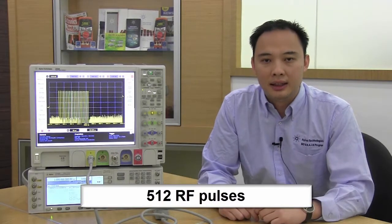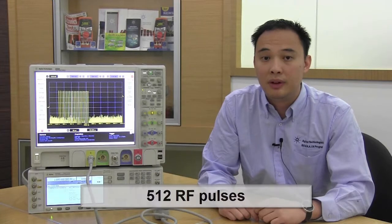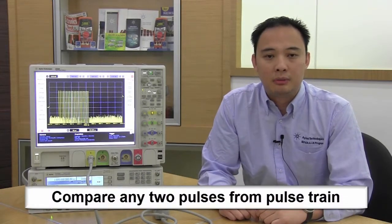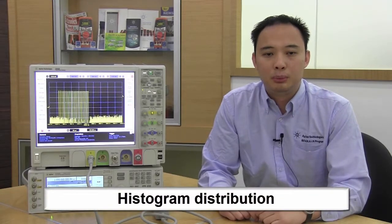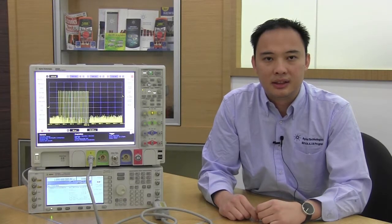The new 8990B multipulse software is designed to first, capture and analyze continuously 512 RF pulses for both RF channels, second, compare any two pulses from the pulse train, and third, display histogram distribution presentation for pulse parameters. These features are especially important for output stability tests.